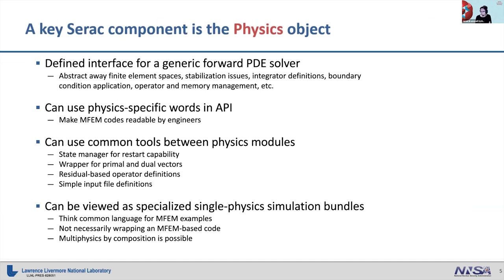In developing this infrastructure, it came down to: what do we expect out of a simulation code? A lot of it came down to this physics object. We want an engineer who doesn't have a background in finite elements or high-performance computing to be able to look at the code and understand what it's doing. So we try to make these physics modules physics-aware. MFEM talks about H1, H(div) — these modules are physics-aware. This is: I am a thermal conduction object, you will set my thermal conductivity, you will set my heat flux boundary conditions. Someone who doesn't understand the discretization can still understand what it's doing.